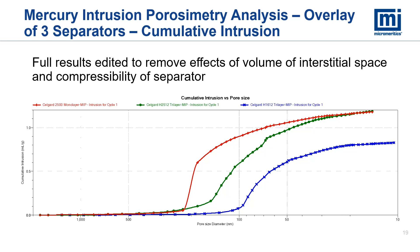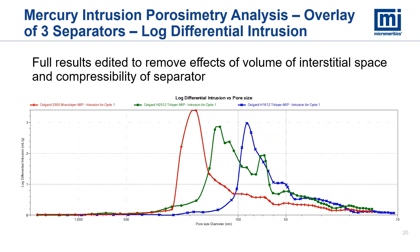To compare the pore volume distribution of the three separators analyzed, we overlay the cumulative pore volume distributions. The monolayer separator shown in red is found to have larger pores than the tri-layer separators shown in green and blue. The monolayer separator and the H2512 tri-layer separator have similar total pore volumes, greater than that of the H1612 separator, though all three separators have different pore sizes. The pores in the monolayer separator are the largest and it has the simplest distribution — there are no well-defined additional modes after the primary one. The pore volume distribution for the two tri-layer separators shows more detail on the skewed smaller-diameter side, with the H1612 separator showing the smallest pore opening diameters.